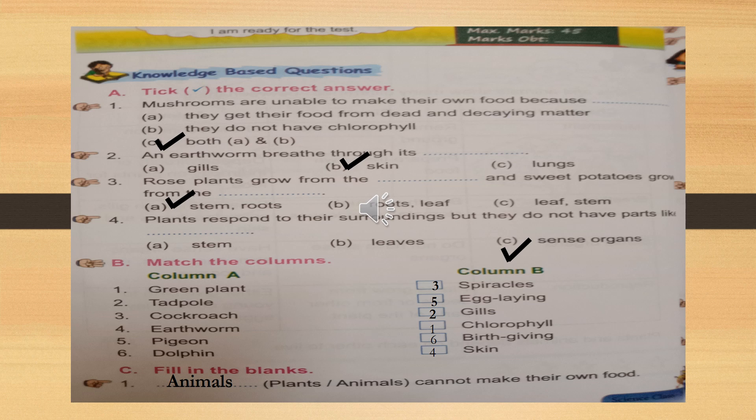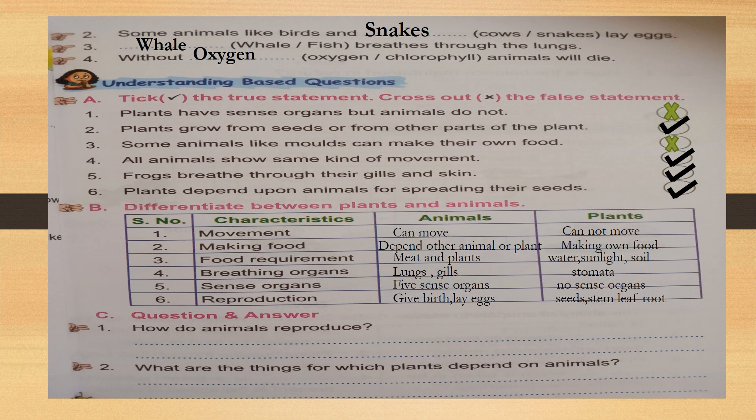Now turn to the next page — page number 11. Look at the page. Second one: some animals like birds and dash lay eggs. What animal lays eggs like birds? Snakes! Those who are correct, lift your hand. Very good children. Check your answer: some animals like birds and snakes lay eggs.